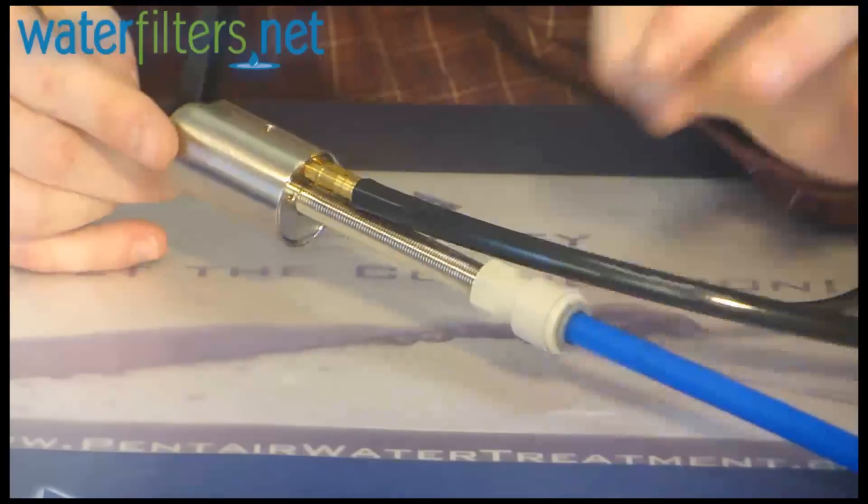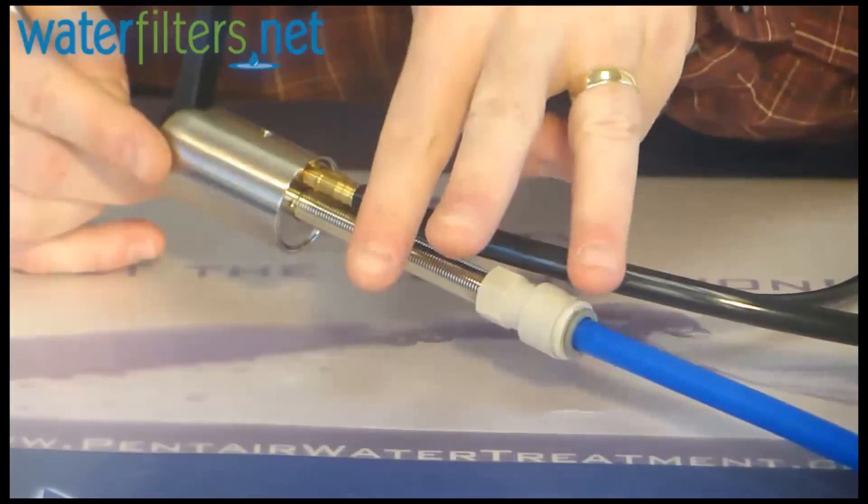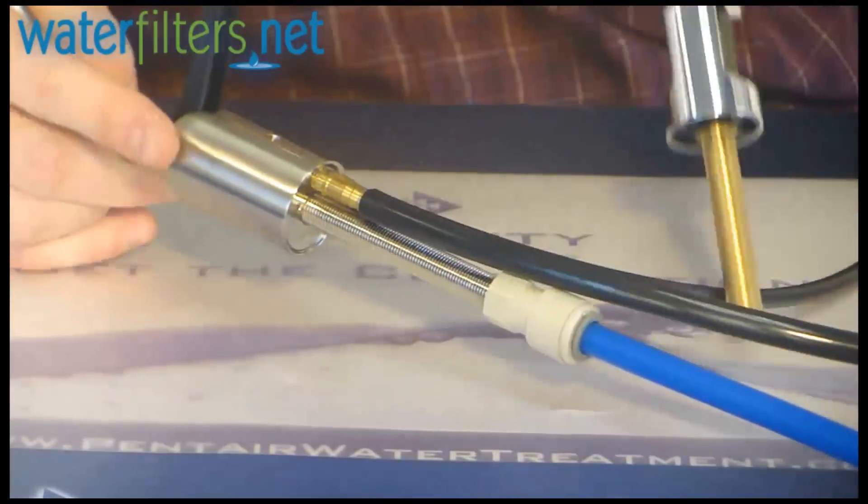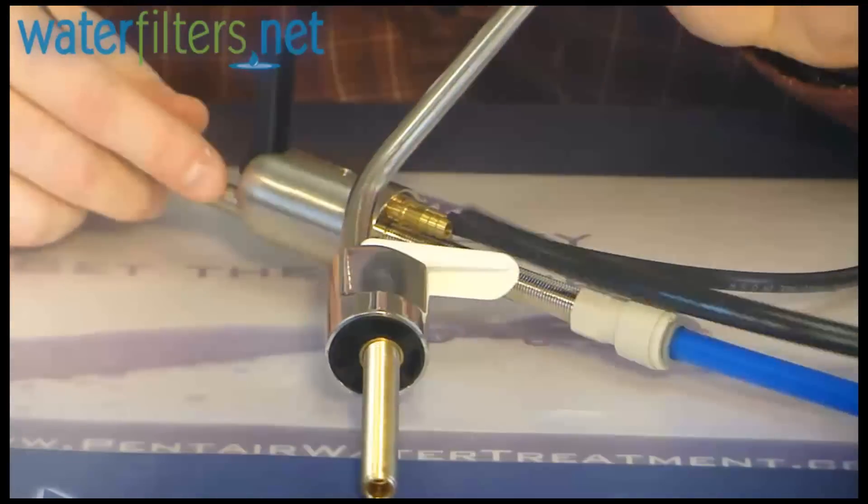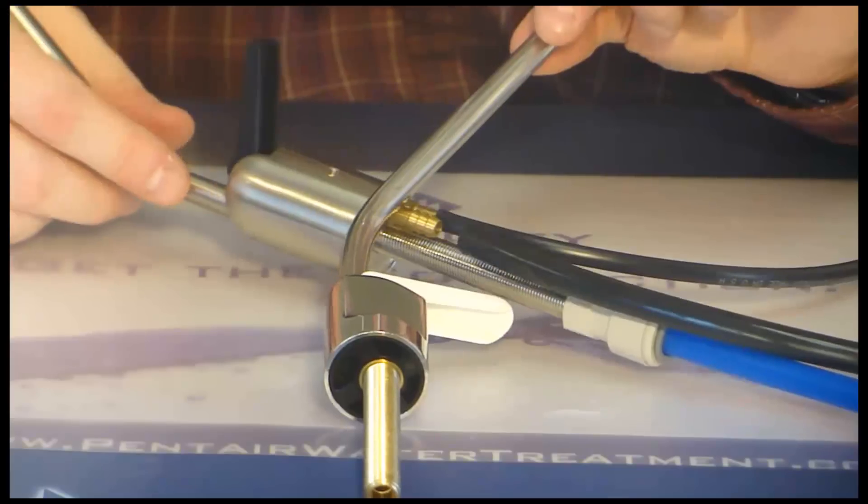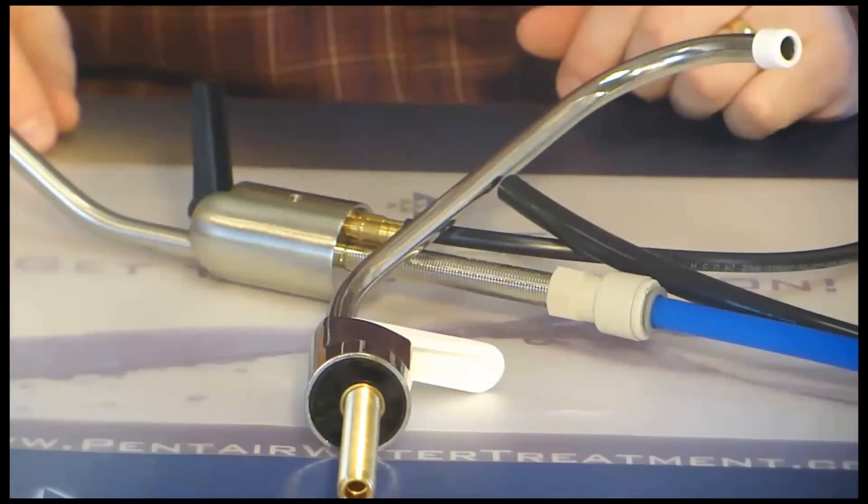So the air gap faucet has three water lines attached on the underside, and a regular has only one. That is the difference. I'm your host Aquaman, and thanks for watching.